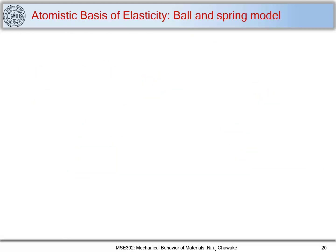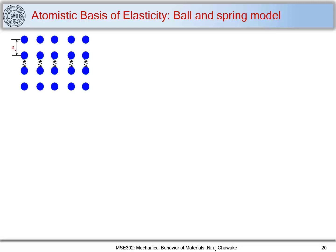Another way of looking at bonds between metals or alloys is the ball and spring model. Atoms are represented as balls, and the bonds between them can be represented by springs. All the bonds present can be modeled as springs — from one atom to another in multiple directions. This bonding between atoms can be represented by springs.